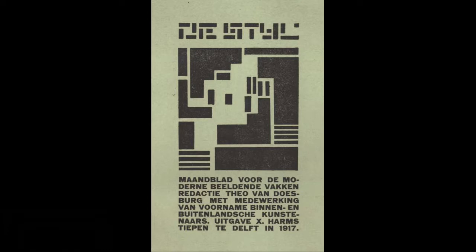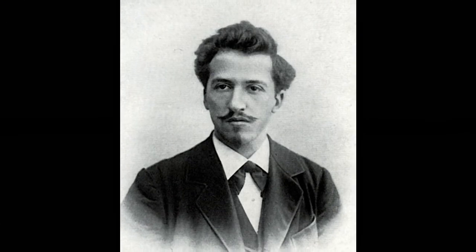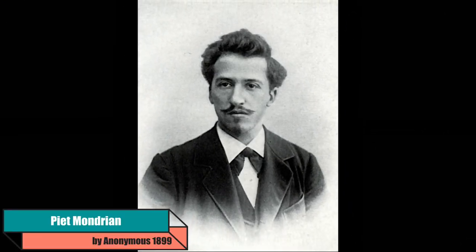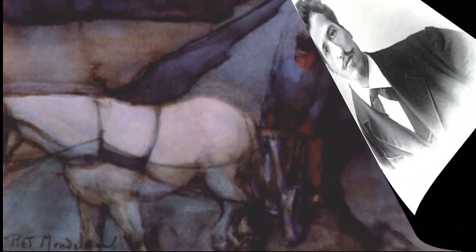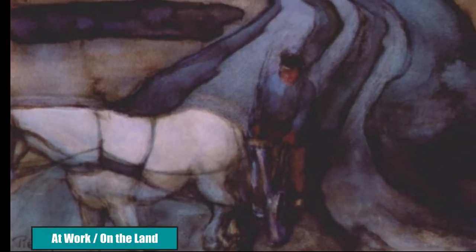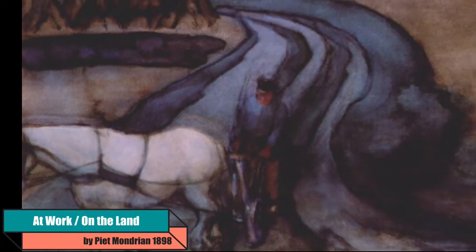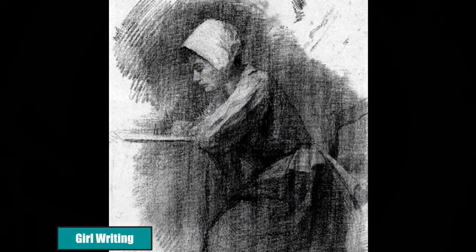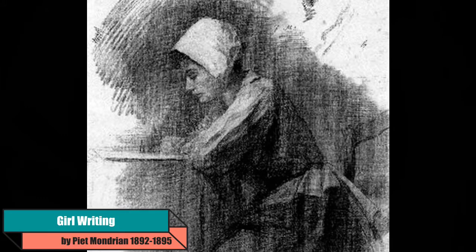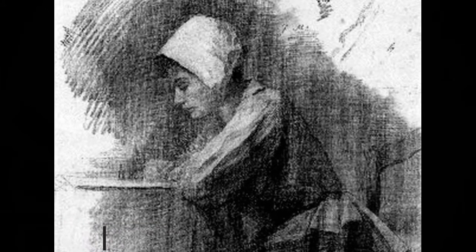The De Stijl journal became a vehicle, through its first-year articles, to help define the aims for one of the group's most central and celebrated figures, Piet Mondrian. Piet Mondrian was born in the Netherlands in 1872 and lived until 1944. He was introduced to the art world when he was young by his father and uncle, who were both artists. He showed talent at an early age, and his paintings were typical of that time frame, mostly landscapes of an impressionist style, artworks with emotion and details.